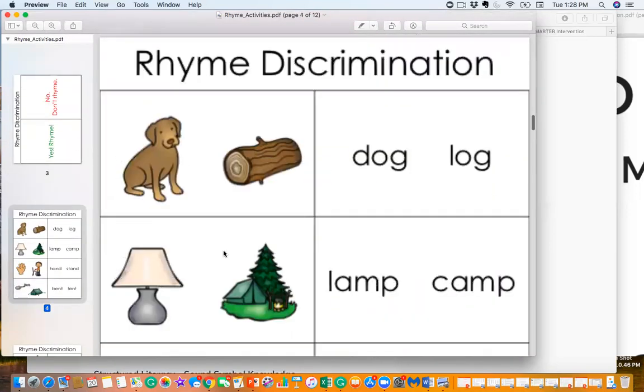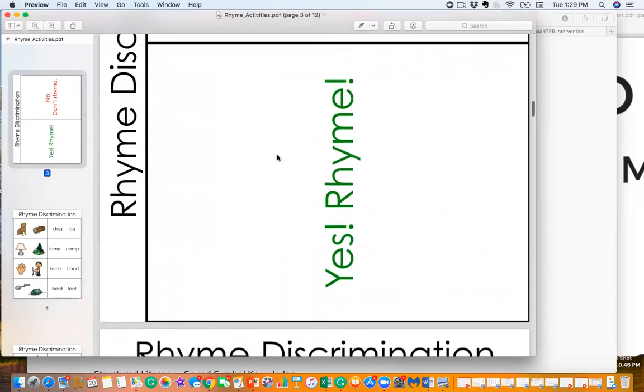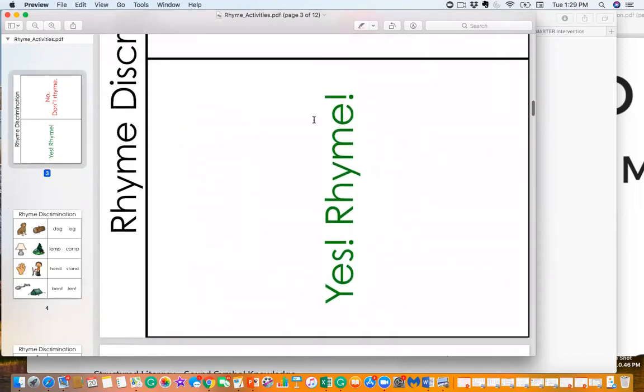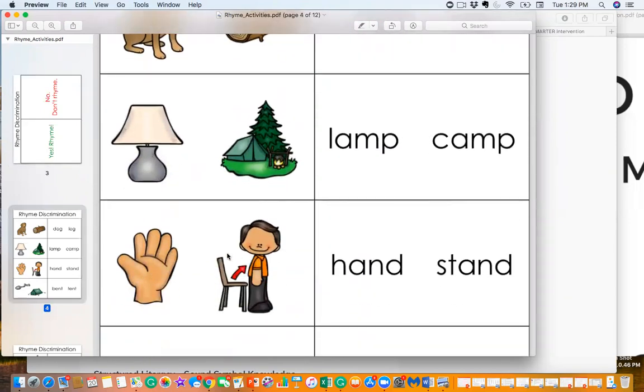We've given you all of these cards where you can show the student the card and then tell them the word, dog, log, or maybe they're ready to say the word dog, log. Does that rhyme or not rhyme? Yes, that rhymes. So they're going to set that card right here on that mat. Then you're scrolling down, hand, stand. Does this rhyme? And again, they're going to lay it on the mat. Isn't that the cutest?